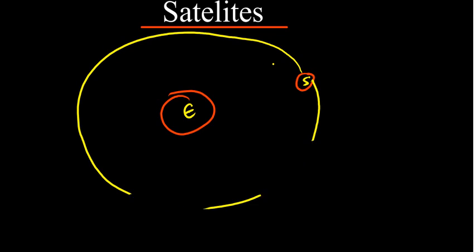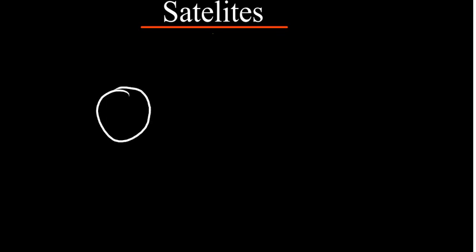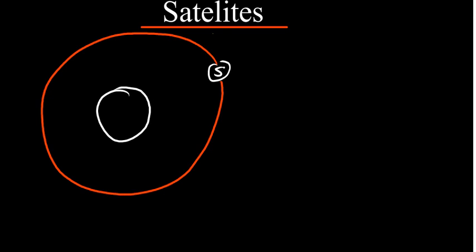Let me give you a clear picture of a satellite. Let's say we have a central body — I'll call it F — and then I'll have the satellite here. The satellite, such as the Moon, moves around in a circle. This central body F has a radius R1 from its center to its surface, and R2 is the radius from that point all the way to the satellite.